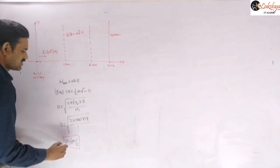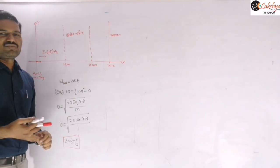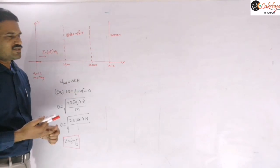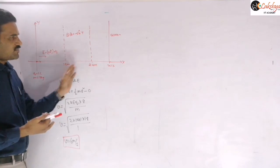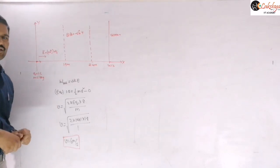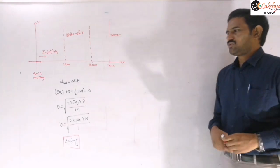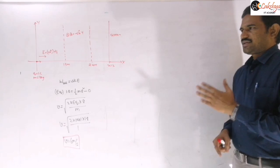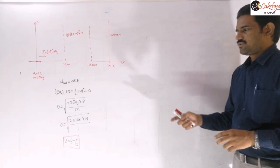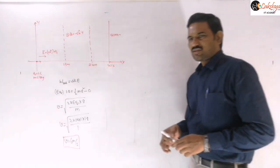When the particle crosses 1.8 meters its speed is 6 m/s. Even though it then travels under the action of the magnetic field, the speed remains constant — it does not change. Therefore the particle strikes the screen with the same speed of 6 m/s, since only the electric field accelerated it.